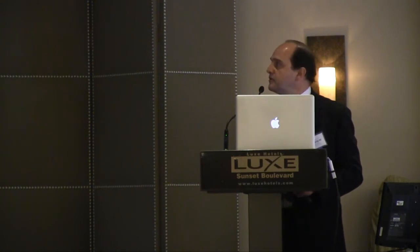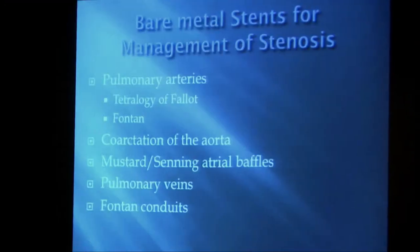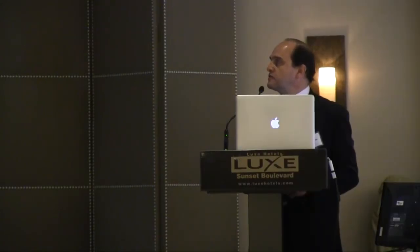In terms of adult congenital heart defects, the areas where we would most likely apply stents to relieve obstructions include the pulmonary arteries in the setting of tetralogy of Fallot or Fontan, coarctation of the aorta, the baffles within Mustard or Senning repairs — some of which are notorious for having obstructions — as well as pulmonary veins or Fontan conduits.